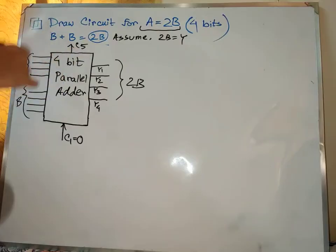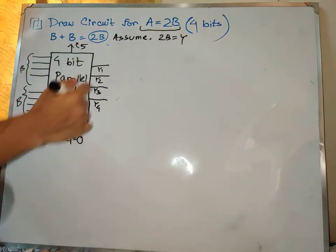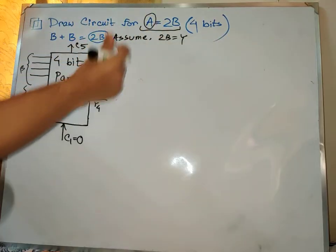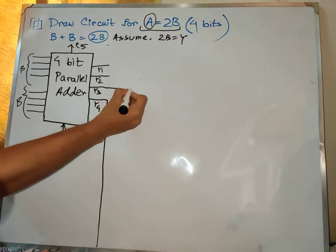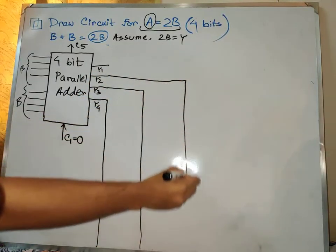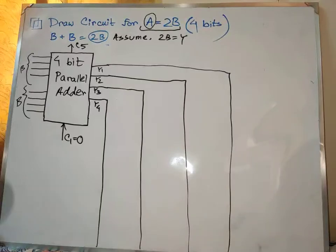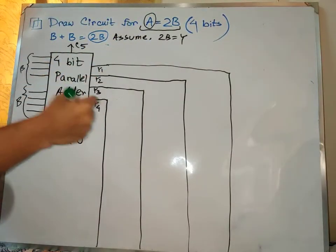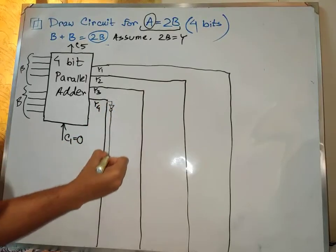We can choose the adder circuit. We also put 2b and we give y. Here are the two things we will compare. The output is what we will compare. The output is the same thing we will compare on the right-hand side.